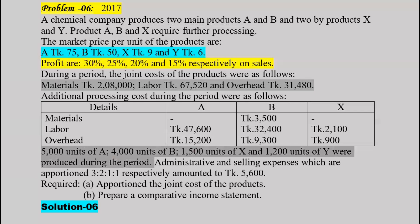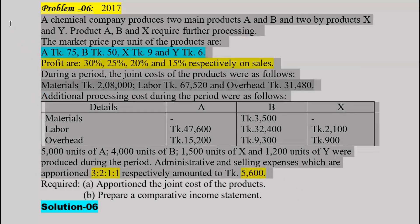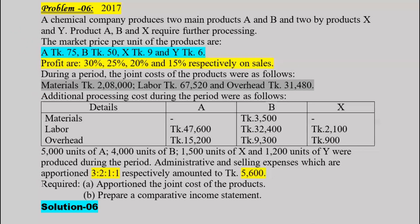The quantities produced during the period are noted. We are looking at the production of products A, B, X, and Y, and the joint cost will be allocated among these products based on the defined basis.